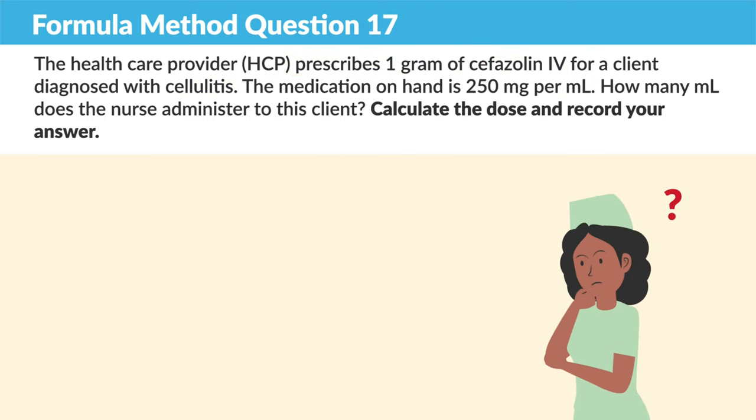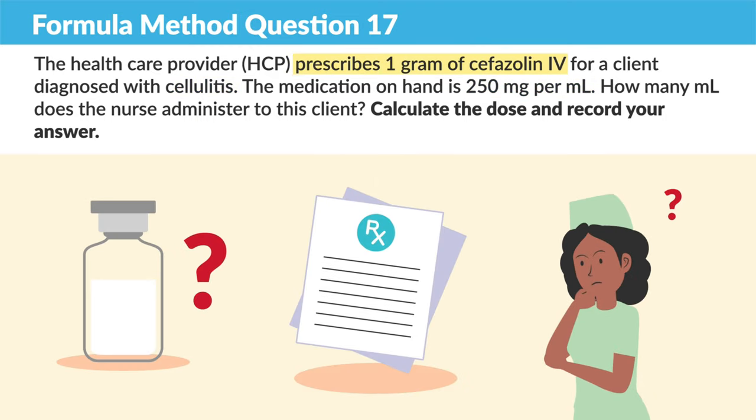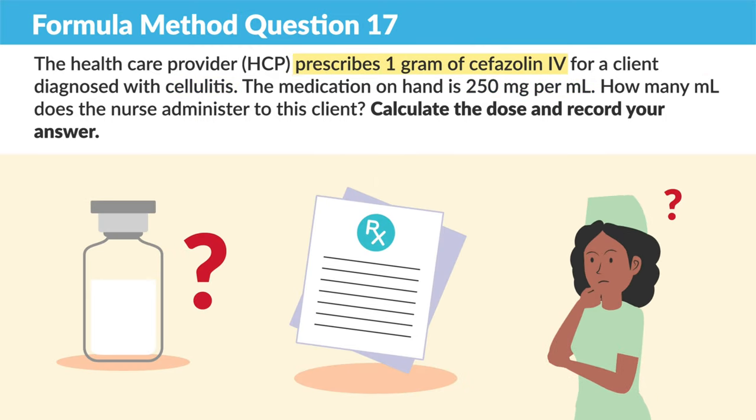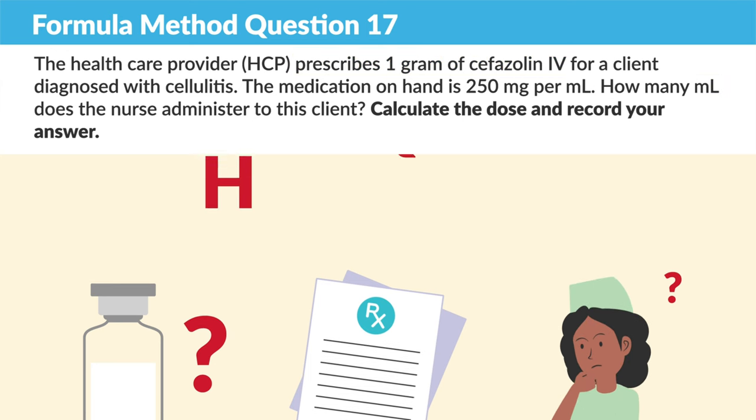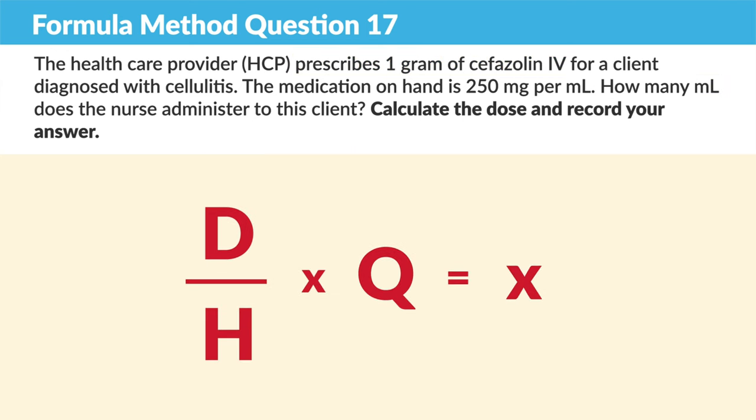So as usual, first we're identifying what we are solving for. We're solving for mLs per dose. Then we're setting up our desired over have formula method.